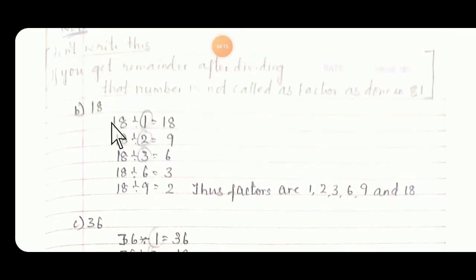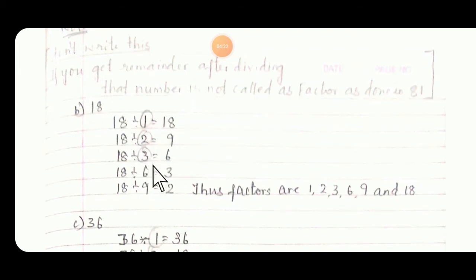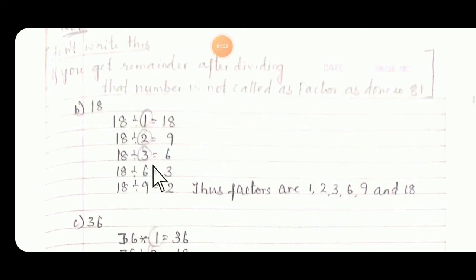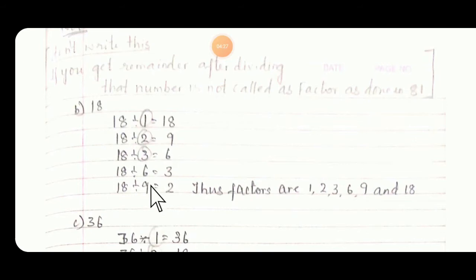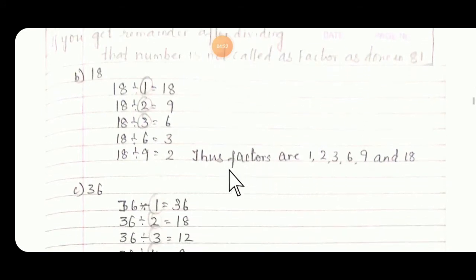18. 18 divided by 1 you will get 18. 18 divided by 2 you are going to get 9. Then 18 divided by 3 also gives 6. So these are: 1, 2, 3, 6, 9 — are the factors of 18.